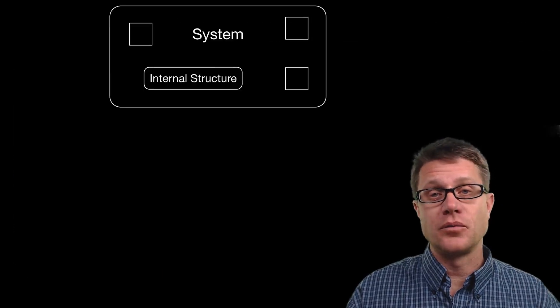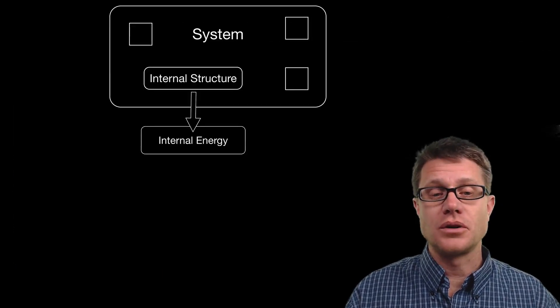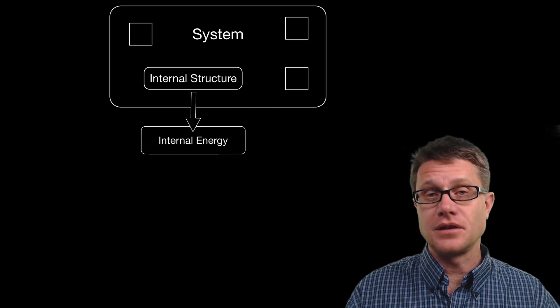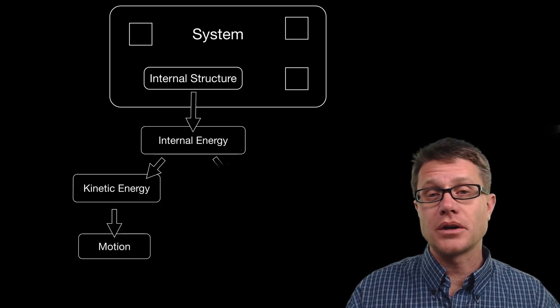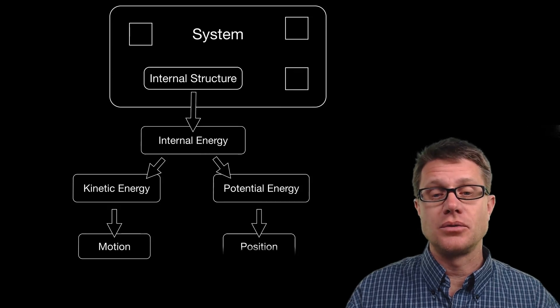If you have a system with internal structure then there is going to be internal energy within that system. That energy could be kinetic energy, that is energy due to its motion, or it could be potential energy, which is due to its position.